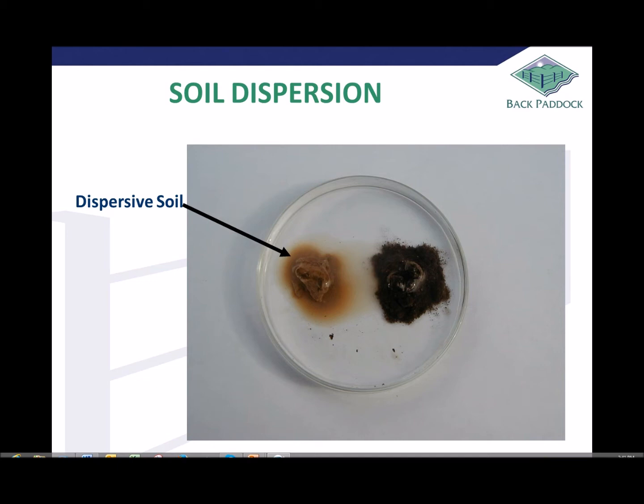And as a result, once they lose that flocculation, you lose soil structure. You end up with crusting — for example, crusting after rain. In front of you there is a photograph of two peds of soil put into a petri dish, probably with distilled water.